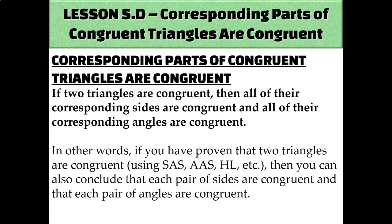So what this is saying is: corresponding parts of congruent triangles are congruent, which we abbreviate as CPCTC — because "corresponding parts of congruent triangles are congruent" is just way too long. We can use CPCTC to say that if I knew the two triangles were congruent, then all the other things I didn't have to state in order to prove congruence — those things have to be congruent too.